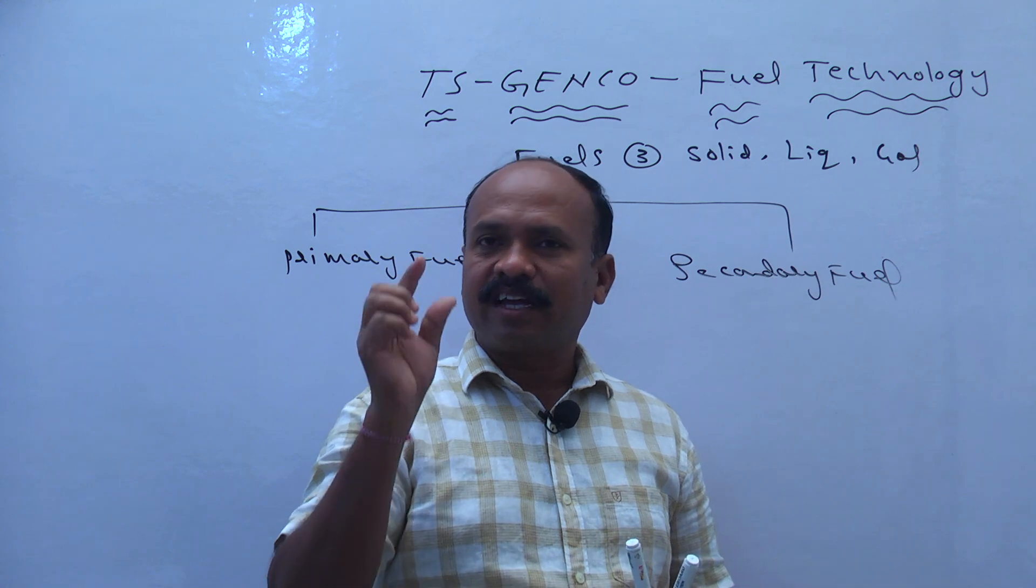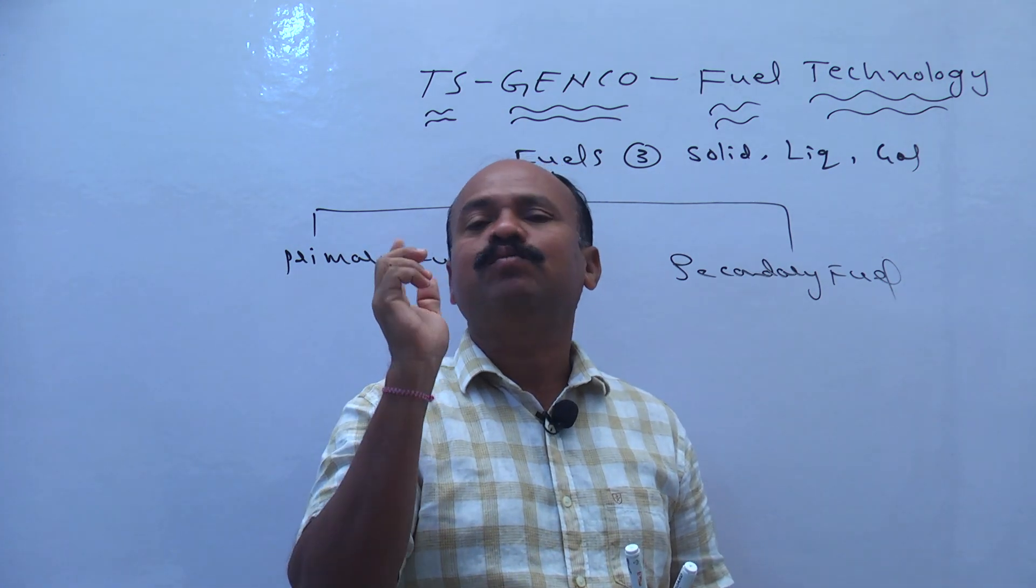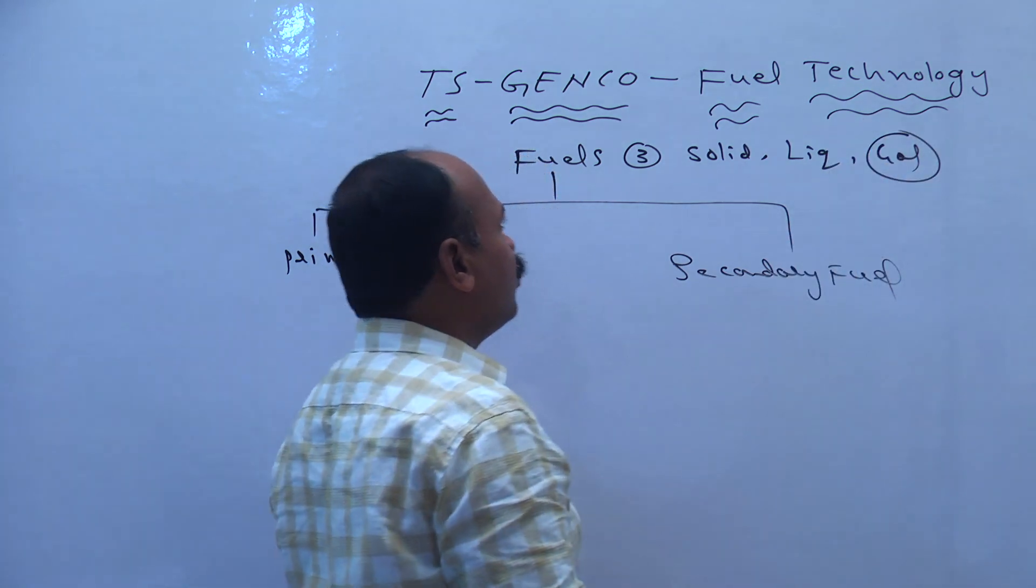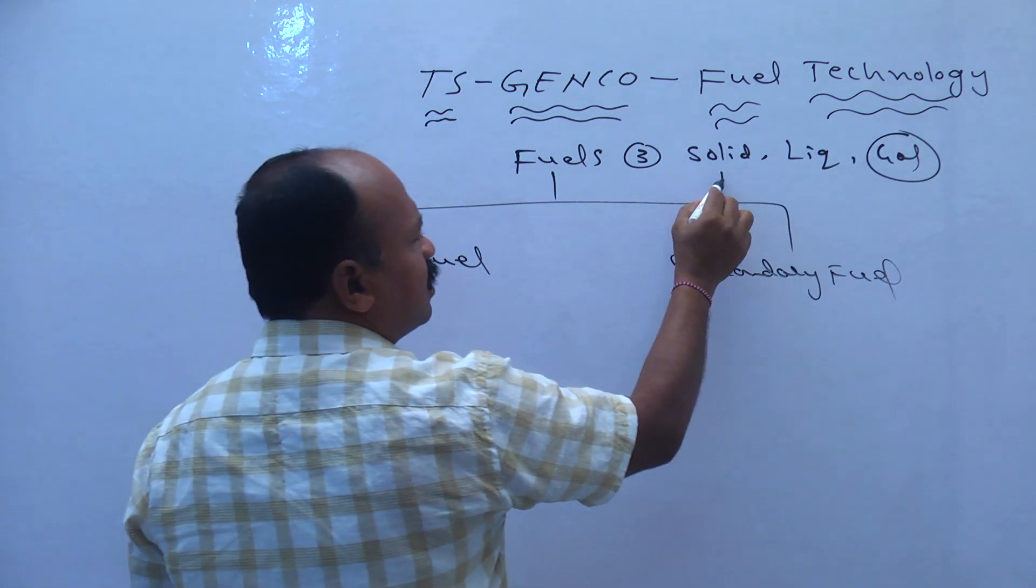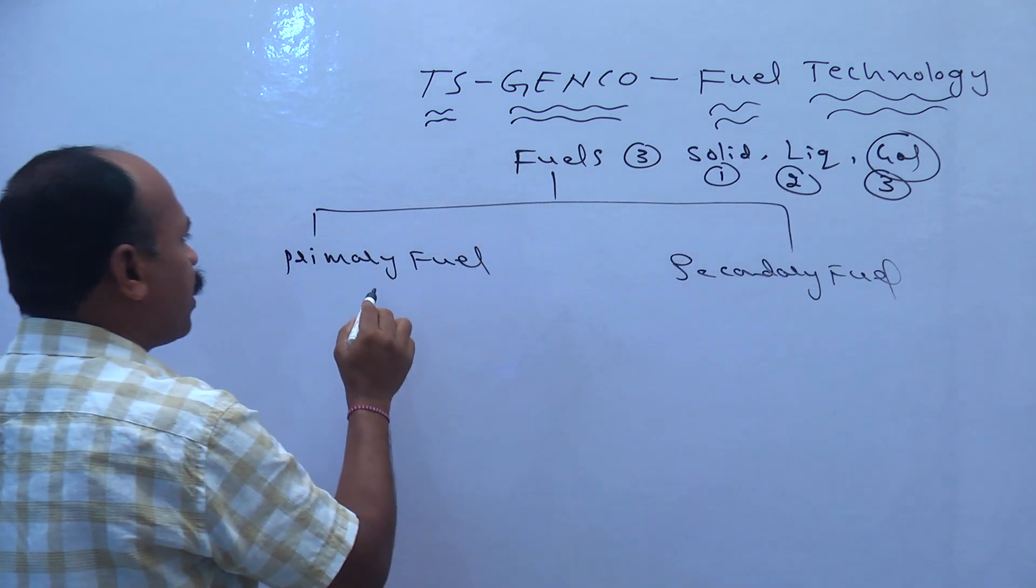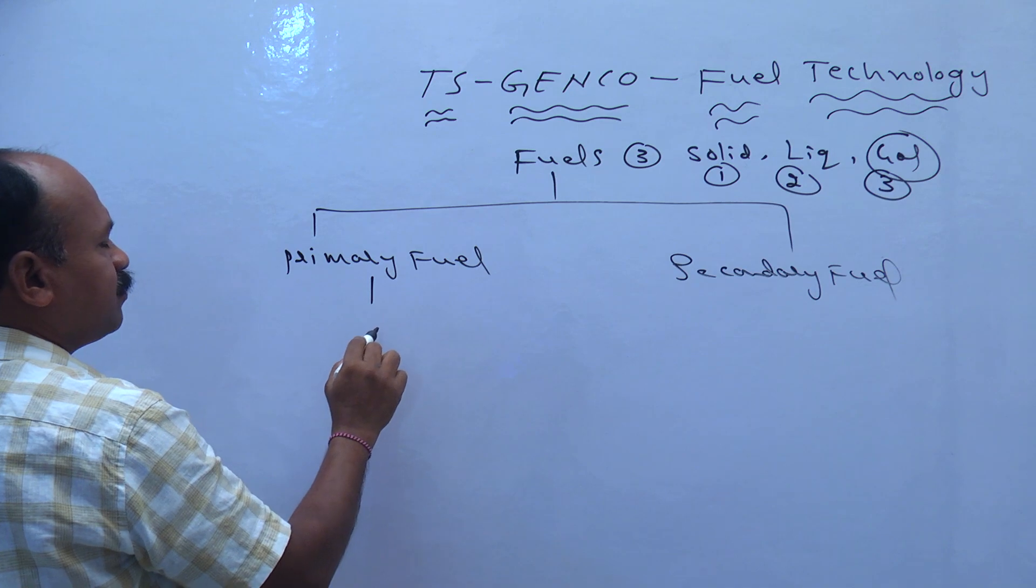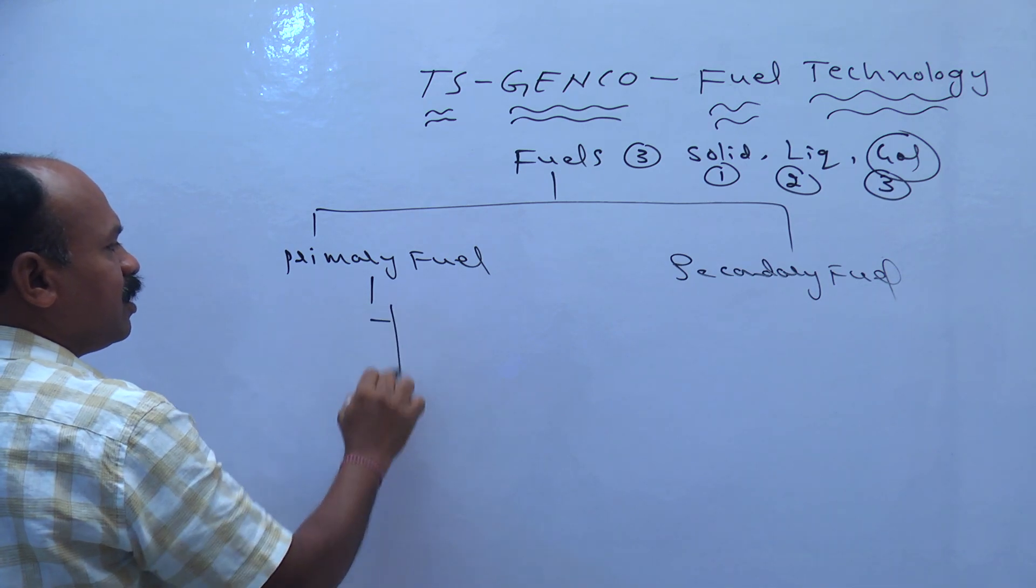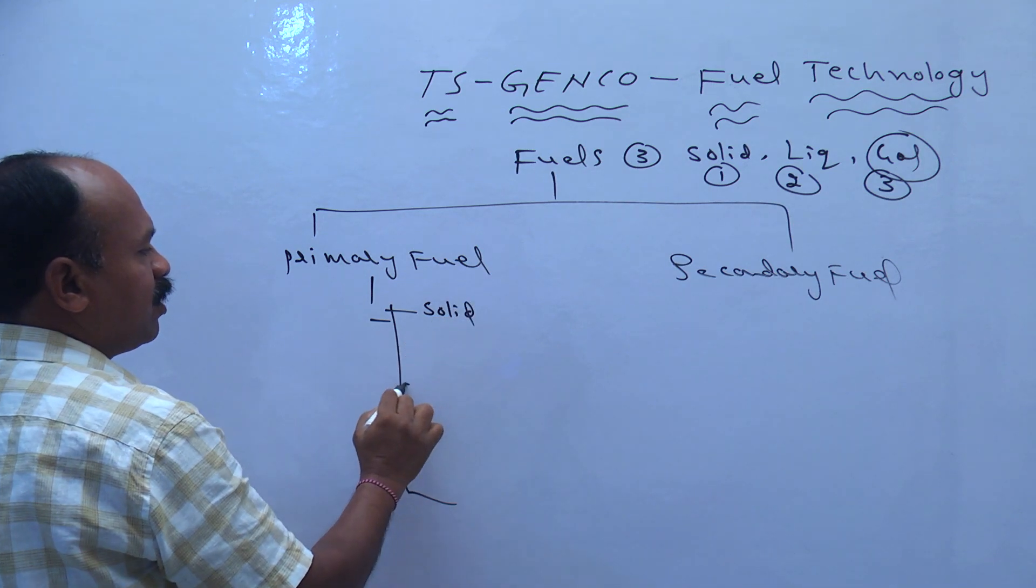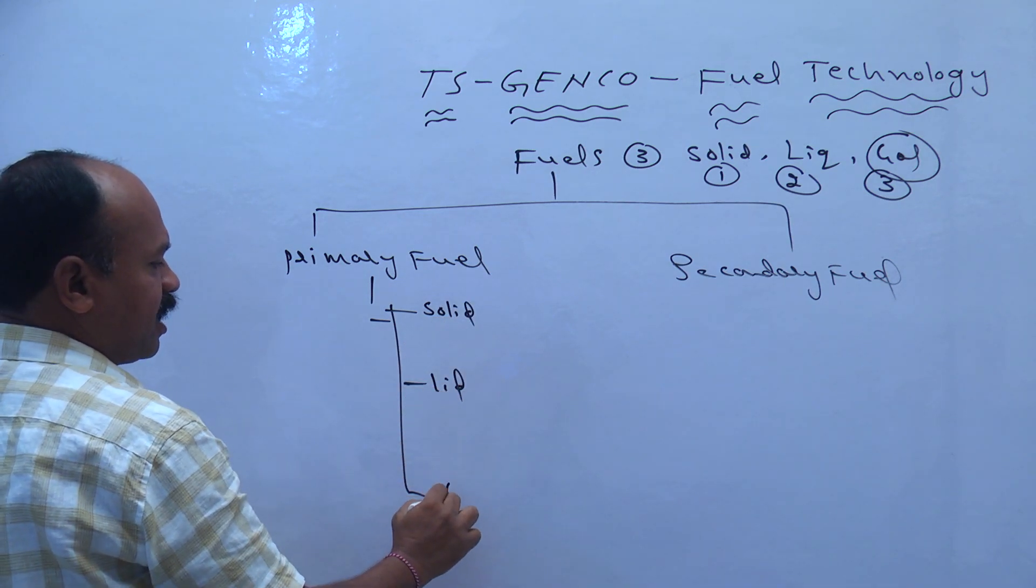Why? Because the gases produce less ash and more heat. Good fuel is gas fuel. Fuels are three types: solid, liquid, gas. Primary fuels also three types: solid fuel, liquid fuel, and gas fuel.